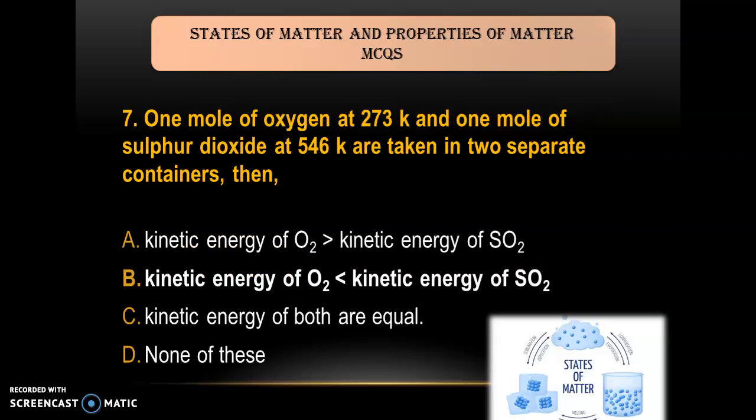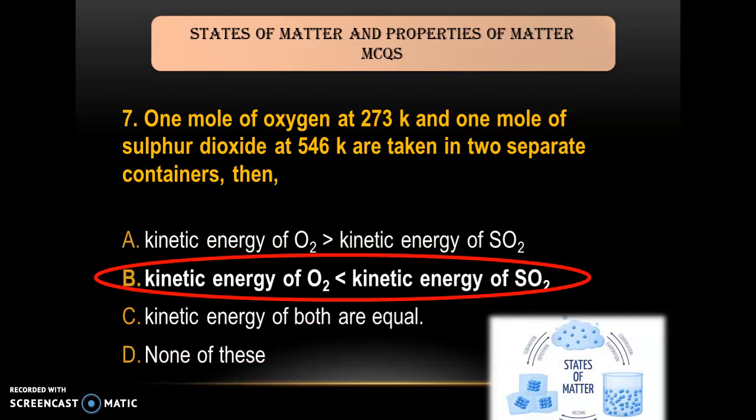Question 7: One mole of oxygen at 273 K and one mole of sulphur dioxide at 546 K are taken in two separate containers. Then — A) kinetic energy of O₂ is greater than KE of SO₂; B) kinetic energy of O₂ is less than KE of SO₂; C) kinetic energy of both are equal; D) none of the above. Since the temperature of oxygen is less than that of sulphur dioxide, the kinetic energy of O₂ will be less. The answer is B.